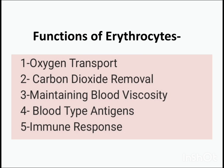Now coming to the functions of erythrocytes. The most important function is oxygen transport — RBCs utilize hemoglobin to bind oxygen in the lungs and transport it to body tissues. The second function is carbon dioxide removal; as tissues metabolize oxygen they produce CO2, which RBCs carry back to the lungs to be exhaled. Third is maintaining blood viscosity, which is important for proper blood flow. RBCs also carry blood type antigens on their surface, crucial for transfusion compatibility, and can bind and remove pathogens as part of the immune response.